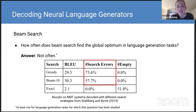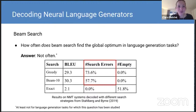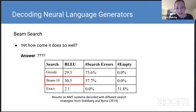The question then is: how often does beam search find the global optimum in language generation tasks? It turns out the answer is not too often. Results from MT systems in a 2019 paper showed that with a beam size of 10, beam search found the global optimum in less than 50% of cases, and with greedy search only about 26% of cases. But we also see that beam search is doing really well in terms of quality evaluation metrics for the language it generates.